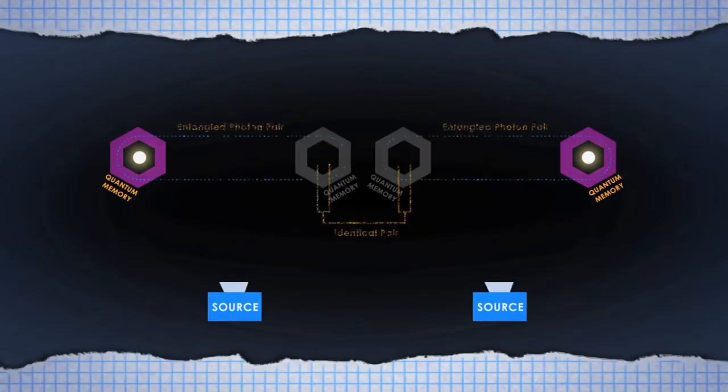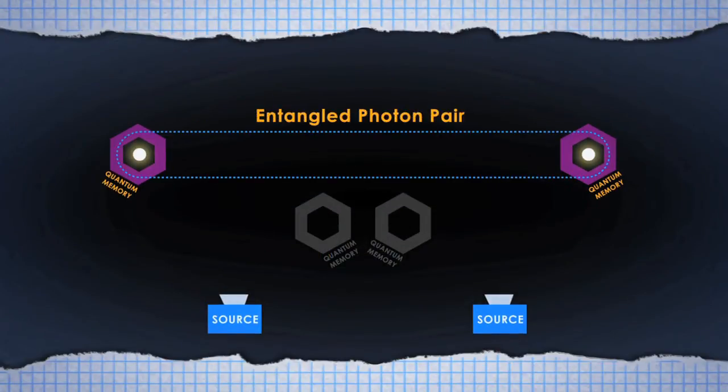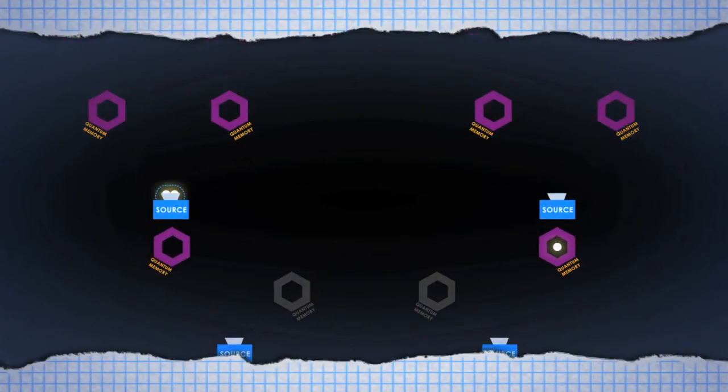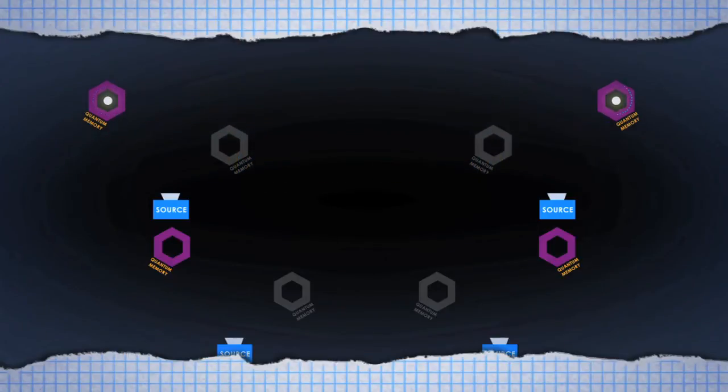The measured photons are destroyed, and the entanglement is swapped to the further two particles, meaning the entanglement is now distributed over twice the distance. The process can then be repeated, allowing the particles to be further apart while remaining entangled.